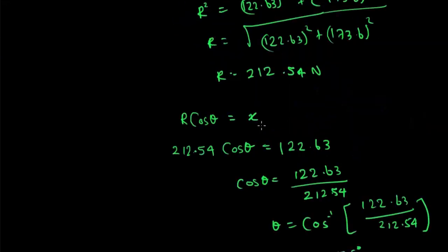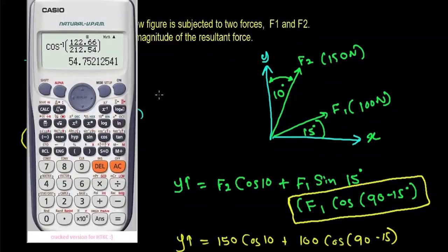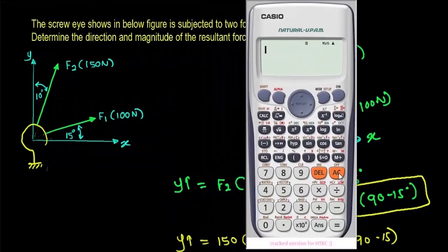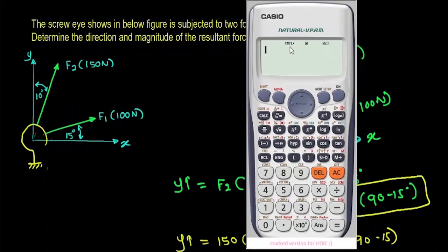If you are interested in using a different method to solve this problem, I can show you another way. In this case, we are using the complex form of the calculator to solve this problem. You have to go to mode and then you have to choose complex numbers. Now it's in complex mode and your angle is in degree mode.